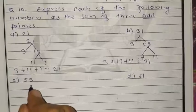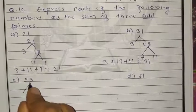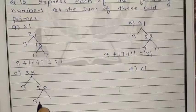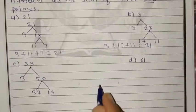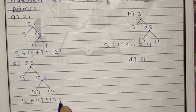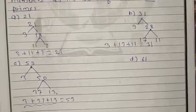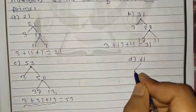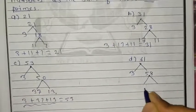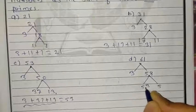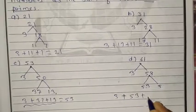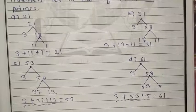For 53: take 3 first, next is 50; break 50 into 37 and 13. So 3 plus 37 plus 13 equals 53. These numbers are odd primes. For 61: take 3 first, next is 58; from 58 take 53, next is 5. So 3 plus 53 plus 5 equals 61. These 3 numbers are odd primes. This answer may vary from one student to another.